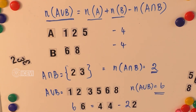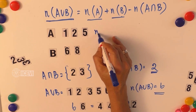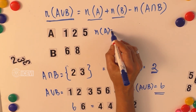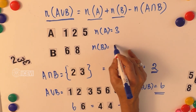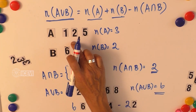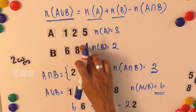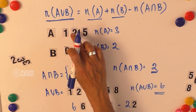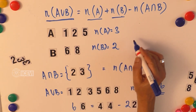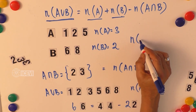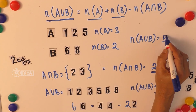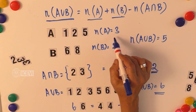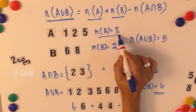If we take the common elements away, A becomes {1, 2, 5} and B becomes {6, 8}, with no intersection. So n(A) = 3 and n(B) = 2. The union is {1, 2, 5, 6, 8}, giving n(A∪B) = 5, which is simply the addition of n(A) and n(B).